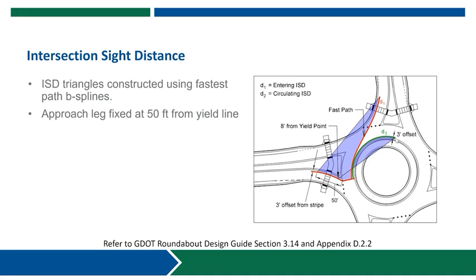We project out a line to the end of our D2 curve that we created, and that creates our intersection sight distance across the central island. Note that if we had done the measurement from the 50-foot point back we would actually have a smaller, less conservative triangle across the central island. So pulling forward and measuring from the point eight feet back actually creates the most conservative sight triangle to make sure that we're covering both areas adequately.